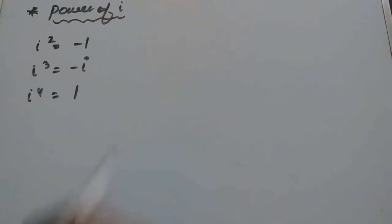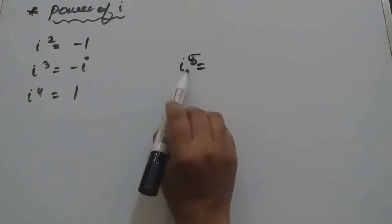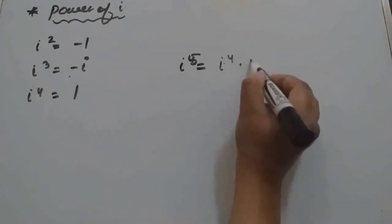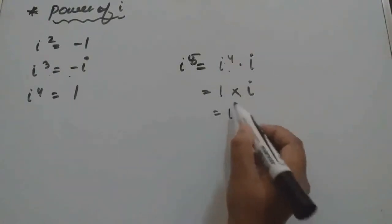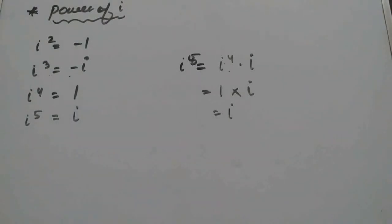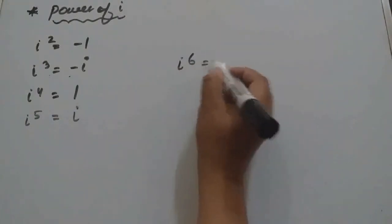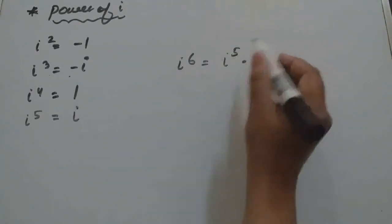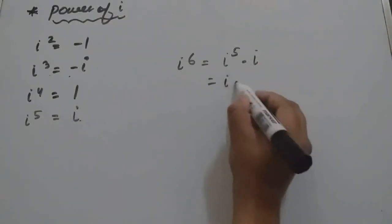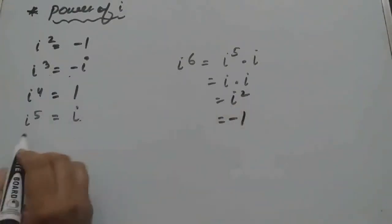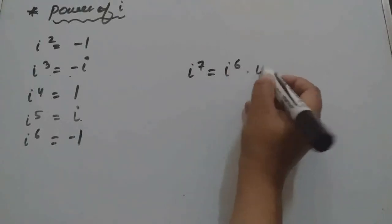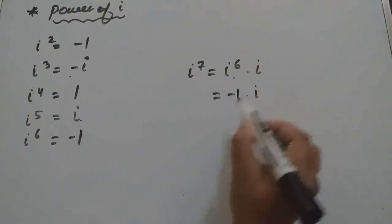For i to the power 5, we write i to the power 4 times i, which is 1 times i, so i to the power 5 equals i. Similarly for i to the power 6: i to the power 5 times i gives i times i equals i squared equals minus 1. For i to the power 7: i to the power 6 times i gives minus 1 times i equals minus i.